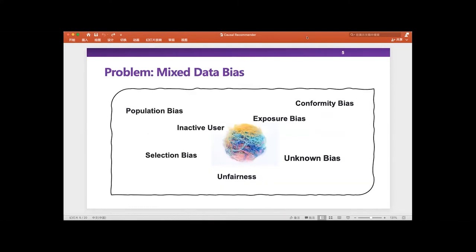Overall, we think that in recommendation scenarios, there are kinds of data bias — for example, position bias, inductive bias, exposure bias, conformity bias, fairness bias, and selection bias. Moreover, there may also exist some unknown bias that is hard to capture with our human knowledge. So how to deal with all this bias together using a recommendation model is a key problem for the future development of the recommendation scenario.